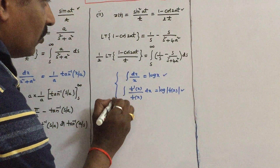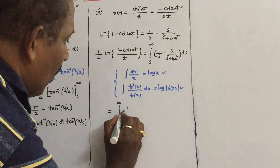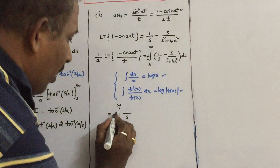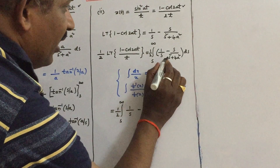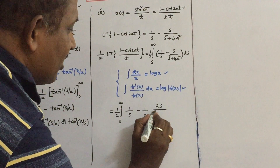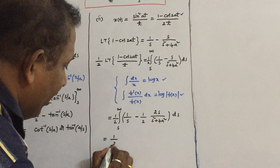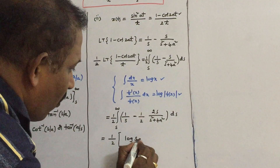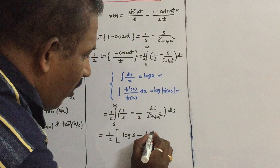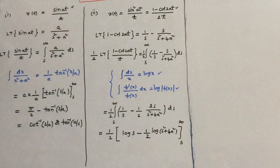So we have 1/2 times the integral from S to infinity of [1/S minus (1/2)(2S/(S² + 4A²))] dS. Integrating, the first term gives log S and the second term gives (1/2) log(S² + 4A²), with limits S to infinity. Applying the log formula, this becomes 1/2 times [log S minus (1/2) log(S² + 4A²)] from S to infinity.